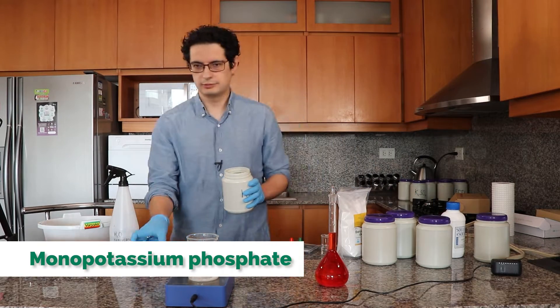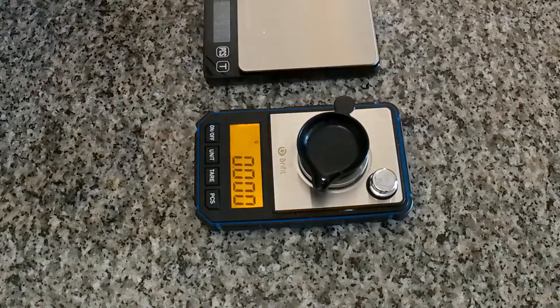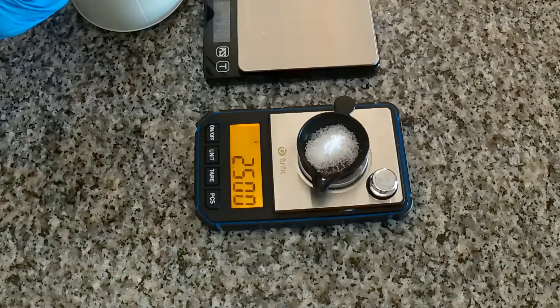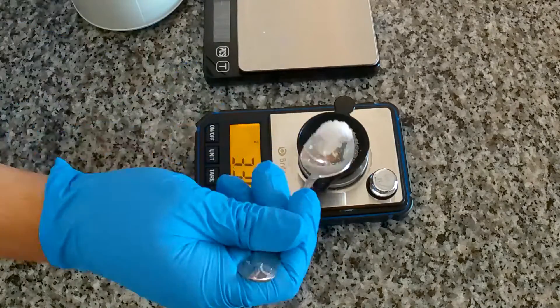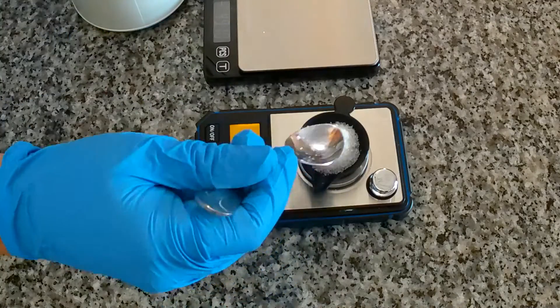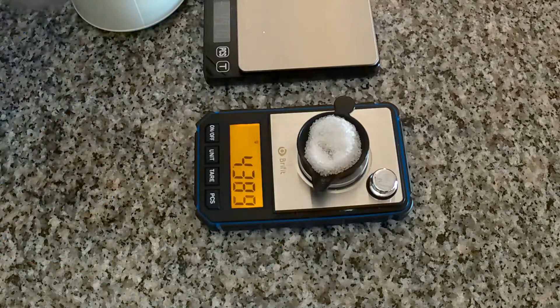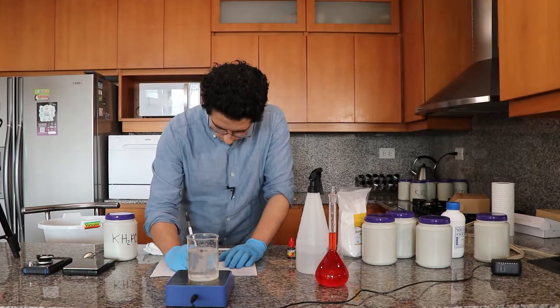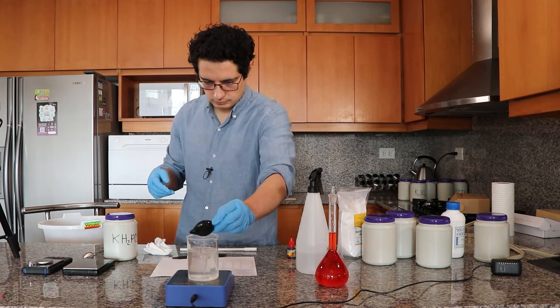Which basically will set the pH of the B solution because it's the most abundant acidic substance we will be adding. So I'm adding it right now so that I set the pH of the solution to something more acidic, so that I will also have less chance of having trouble with the heavy metals.